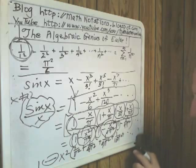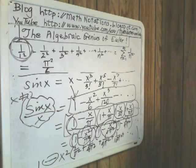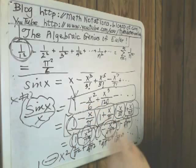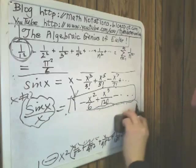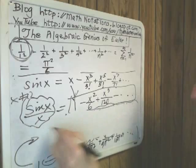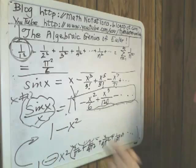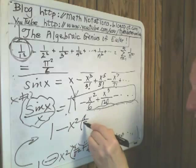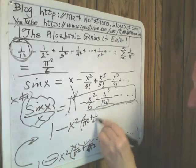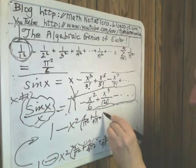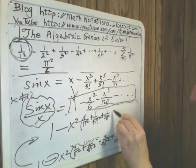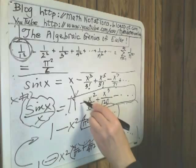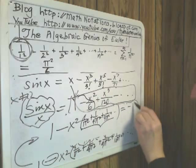And then he matched up all these terms, 1 with 1, the constant terms. And then the coefficient of x squared or negative x squared, he matched it up right here. And when he matched it up, let's see what happened. So this is 1 minus x squared times all of this: 1 over pi squared plus 1 over 4 pi squared, plus 1 over 9 pi squared, et cetera. And he said this coefficient has to be the same as this coefficient, which is negative 1 over 6. Do you see we're done?